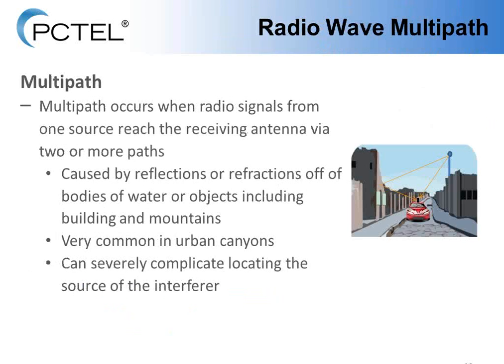Another challenge is multipath, which occurs when radio signals from one source reach the receiving antenna via two or more paths, caused by reflections and refractions off bodies of water, buildings, and mountains, or even temporarily by moving vehicles like trains or semi-trailers. This is very common in urban canyons such as downtown city areas, and it can very severely affect locating the source of an interferer.